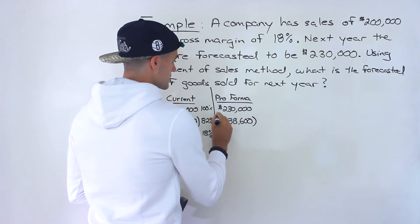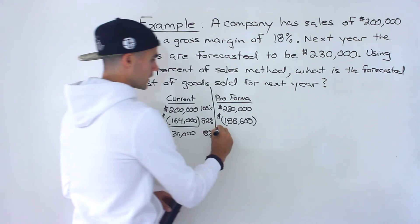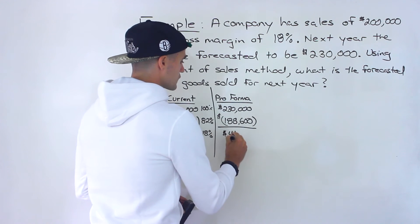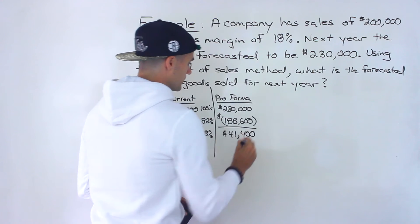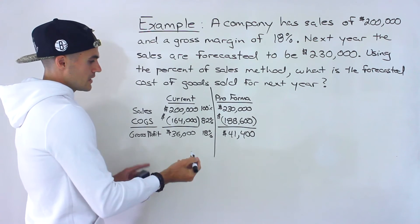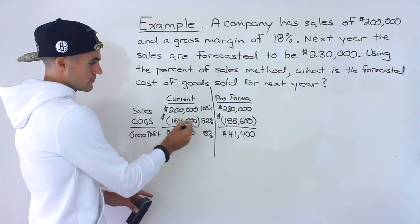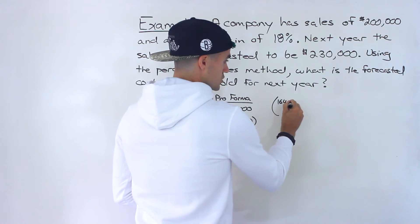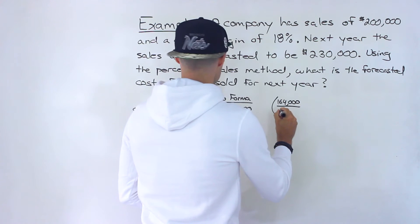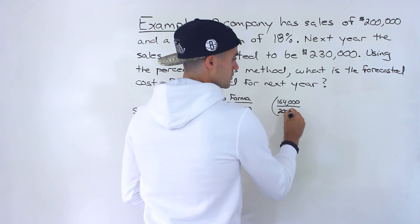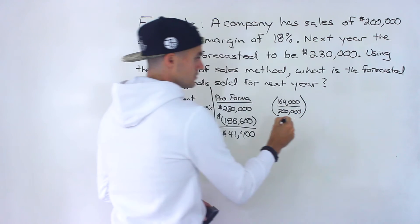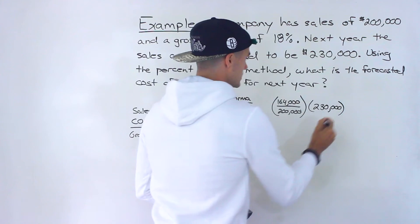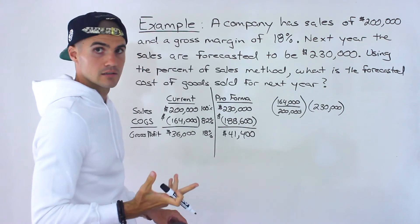That's the answer to the question. And if you want the forecasted gross profit as well — even though they didn't ask for it — it's $41,400. Sometimes they'll give you the cost of goods sold directly in the question, and then it's straightforward: find what percentage it is of sales — 0.82 — then multiply by future sales of $230,000 to get $188,600.